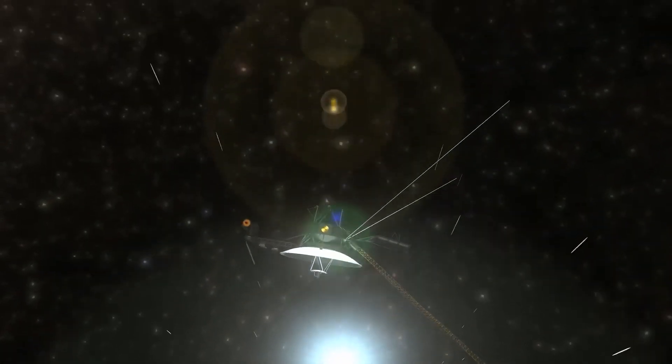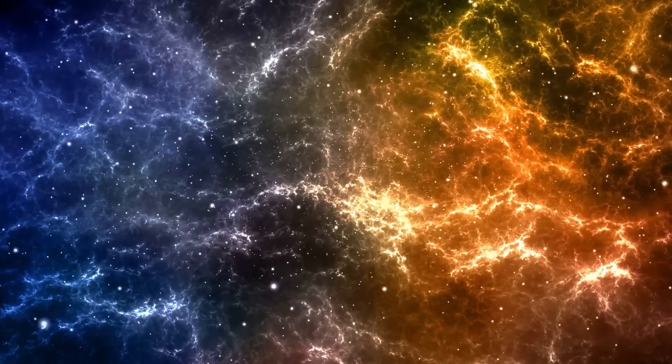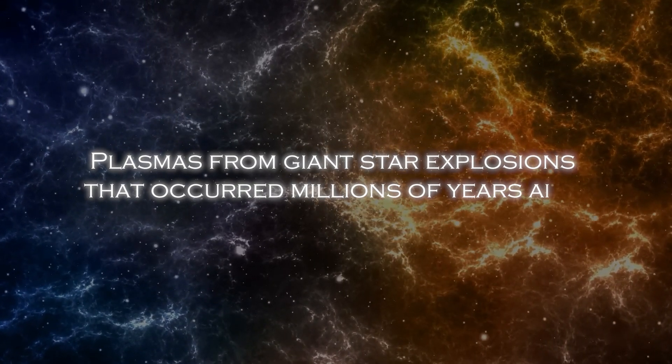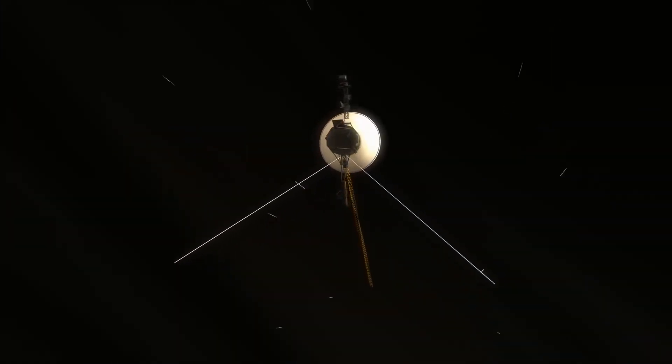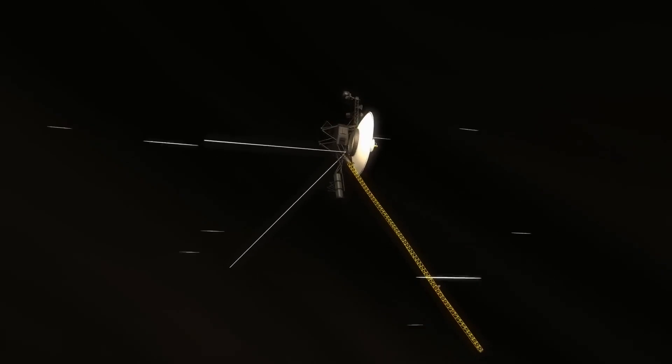Now, Voyager 1 has detected the presence of 300 unknown objects passing through space. This discovery has completely changed our understanding as these objects have been found to be plasma from giant star explosions that occurred millions of years ago. Join us on this journey through the cosmos to find out what these objects discovered by Voyager 1 are all about.